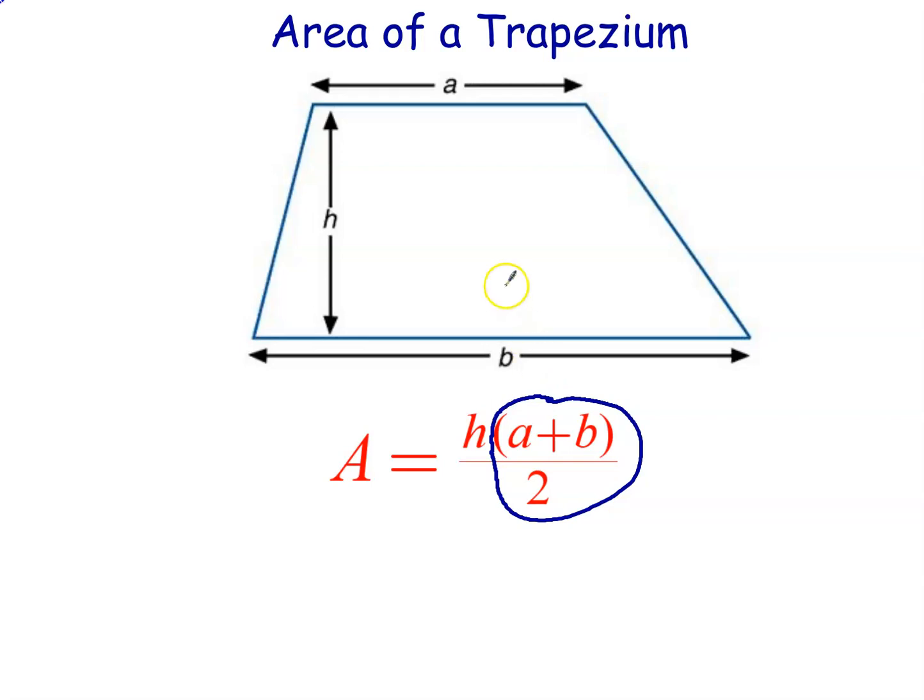So another formula that you could use for the area of a trapezium is just average length times width. So just average the a and the b, add them together and divide by two, and multiply by the width, which in this case is height. And that's the formula that I prefer to think of. It's just length times width once again, but in this case we have to use the average lengths.